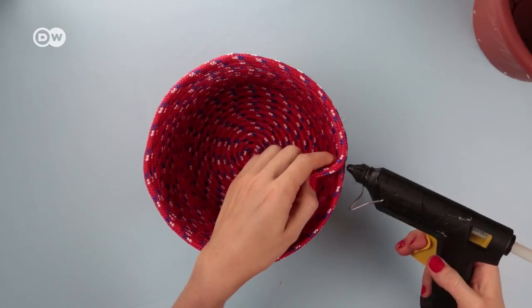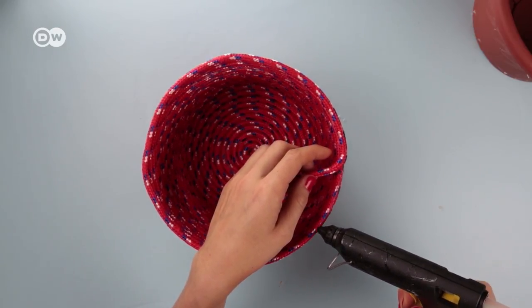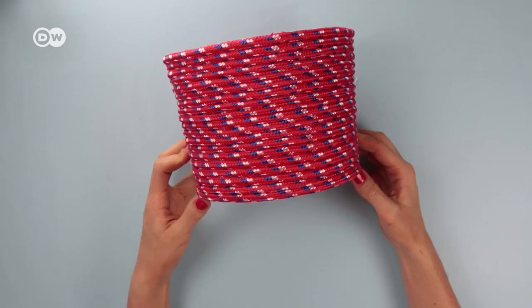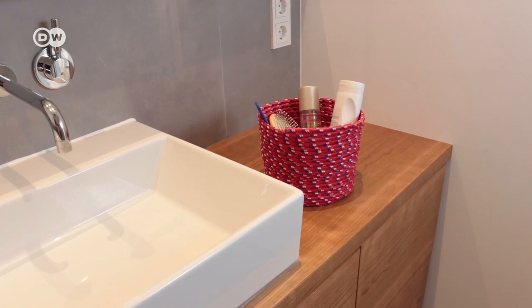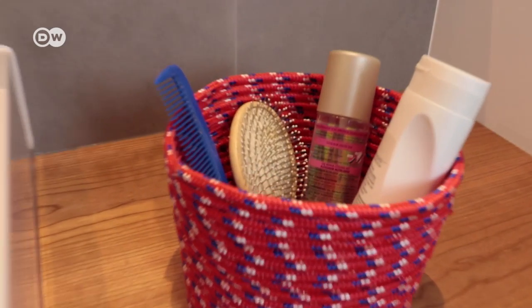And here it is, your do-it-yourself basket almost finished. Now all you have to do is glue down the end and your creation is completely done and very practical for all the odds and ends.